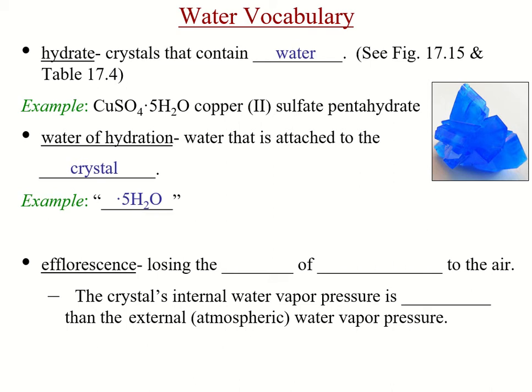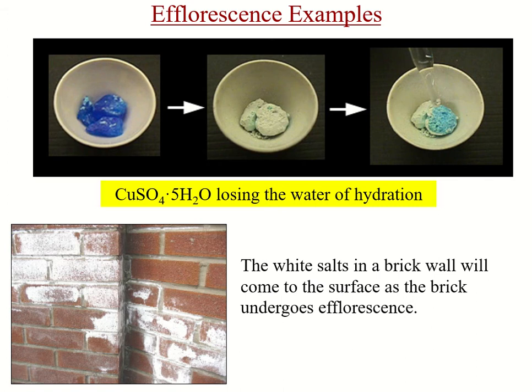Another term to know is efflorescence, which is the losing of water of hydration to the air. The crystal's internal water vapor pressure is larger than that of the external water vapor pressure, and so efflorescence can happen. Here are some examples where the copper sulfate loses the five water molecules that are trapped in it.